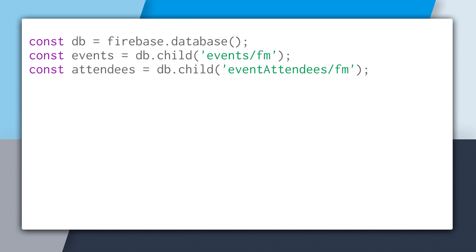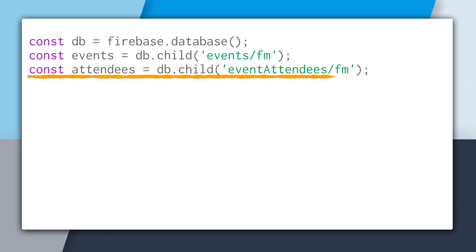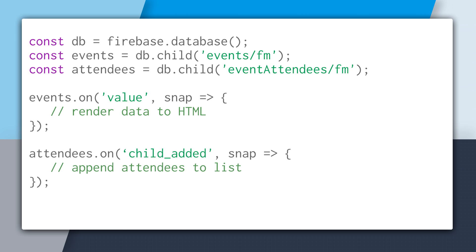And this is how you would create a Firebase query using the Firebase SDK. First, you will create two references — one to the events location and one to the event attendees location. You'll notice that we're using the same key in each collection. FM is a primary key for the event, so when used with event attendees, it's like a foreign key. Now, to retrieve the data in real time, I'm going to create a listener on each reference.